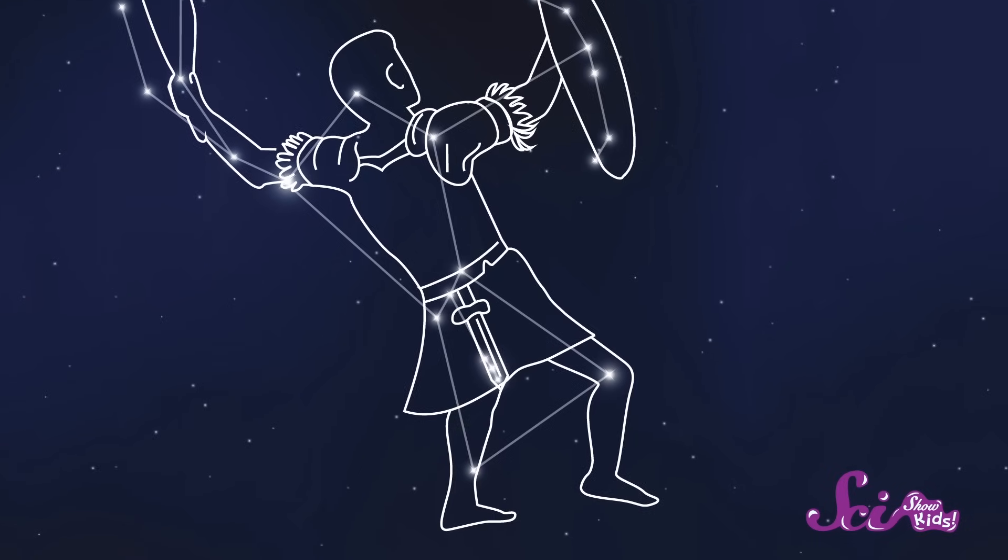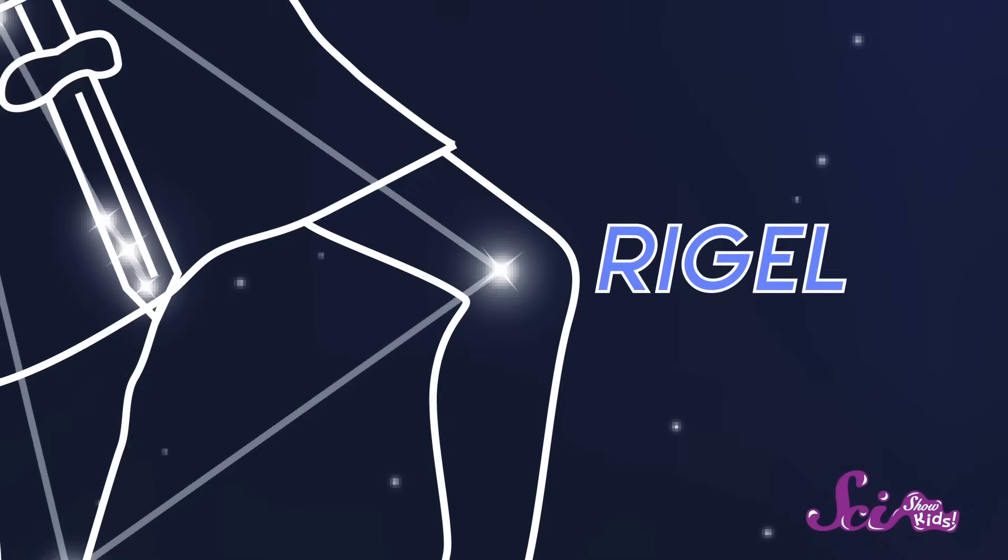If you want to find one, just look for the constellation known as Orion. It's one of the easiest constellations to spot. If you look down to the right, to the star where Orion's knee is supposed to be, you'll find Rigel.